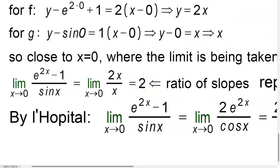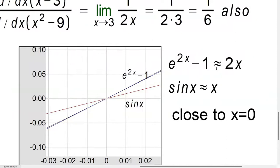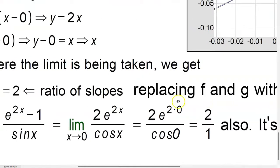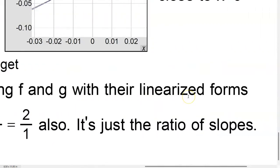But what is that number 2, if you think about it very carefully? It's not just a random number. You see that 2x divided by x is 2. That means that the 2 is just the ratio of the slopes, that's all, of the two linearized versions right here. It's just 2x divided by x, so it's 2 over 1. So basically, it's the ratio of the slopes, replacing f and g with their linearized forms.